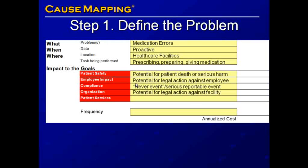There's also the potential for legal action against an employee, which is an impact to the employee impact goal. There's an impact to the organizational goal because of the potential for legal action against the health care facility. Last but certainly not least, there's an impact to the patient services goal because, with a medication error, a patient is receiving the wrong type or dose of medication.